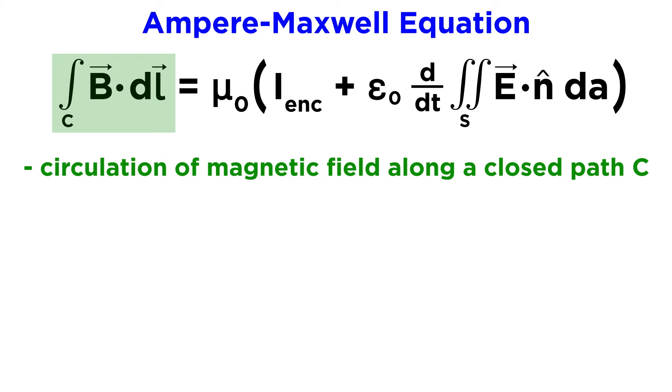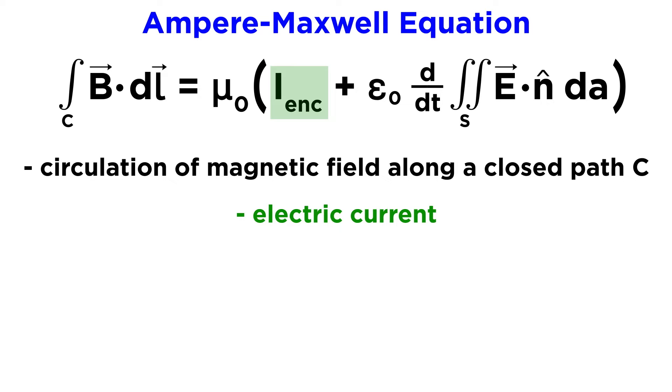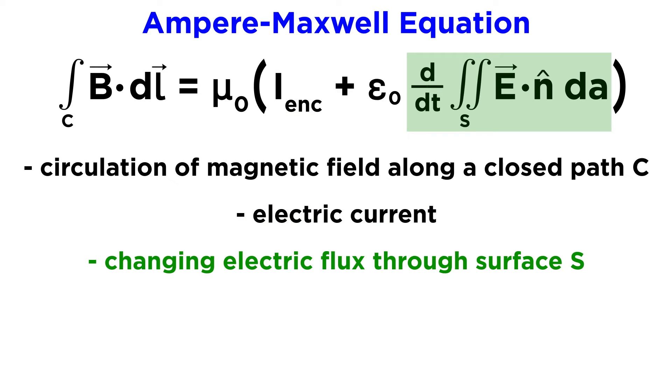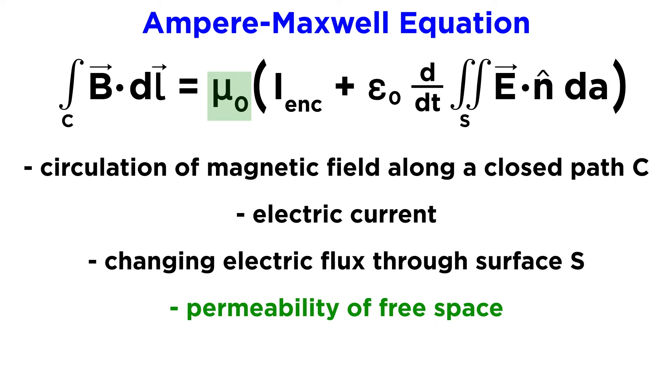The left side represents the circulation of the magnetic field along a closed path C. The right side is divided into two parts, the electric current I, and the changing electric flux through a surface S, which is this whole term over here. And we also have the permeability of free space, represented by mu naught. This differs from the other term we are familiar with, epsilon, which was the permittivity of free space.